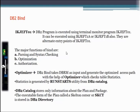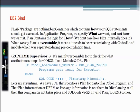The DB2 catalog stores information about plans and packages. The executable form of a plan or package — called a Skeleton Cursor Table (SKCT) — is stored in the DB2 directory. Plans and packages are containers that hold how your SQL statements should get executed in the COBOL program. We specify what we want, not how we want it. A plan contains the logic for how. When we say a plan is executable, it needs to be executed along with the COBOL load module of the pre-compiled modified source code. The runtime supervisor is mainly responsible for checking the timestamps of the COBOL load module and the DB2 plan.